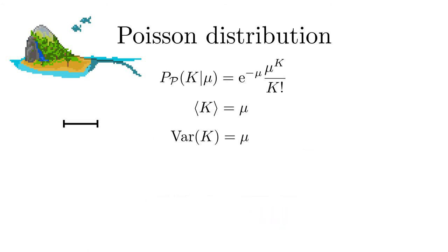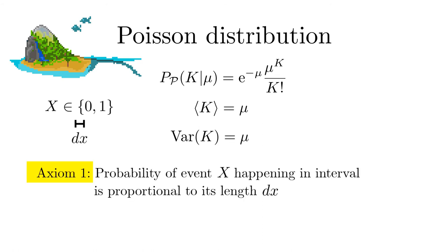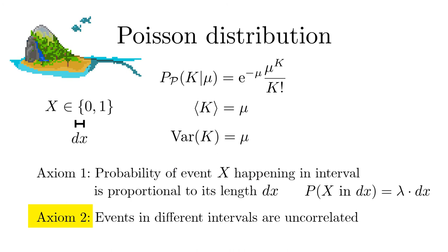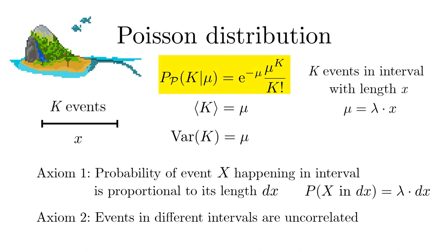The Poisson distribution is not only an approximation for the binomial distribution but an important distribution with its own justification. Assume that within an infinitesimal interval dx an event may occur or not. Two axioms are introduced. First, the probability that an event happens within the interval dx is proportional to the length of that interval. Second, events in different intervals are uncorrelated. Based on these axioms the probability for K events in a finite interval of length x is given by the Poisson distribution. Poisson himself introduced this approximation for the binomial. Unfortunately, he could not witness the enormous importance the distribution named after him has gained since then.